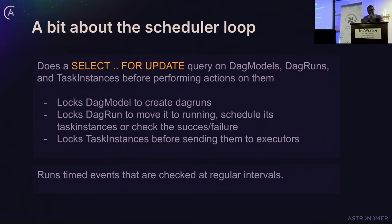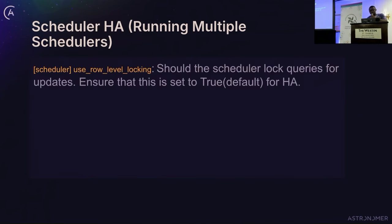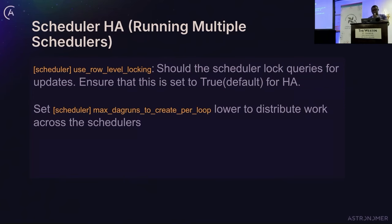The scheduler also runs some timed events at regular intervals. For scheduler HA — running multiple schedulers — you must set use_row_level_locking to true (which is the default), as the scheduler uses it to lock pools, DAGs, and DAG runs. You also have max_dags_to_create_per_loop, which determines the number of DAGs that can be locked to create DAG runs. With two schedulers, keep this value low to distribute work between them.